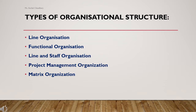Next is types of organizational structure. There are five types: line organization, functional organization, line and staff organization, project management organization, and matrix organization. This topic can be asked in short-answer questions, for example, 'What do you understand by line and staff organization?'